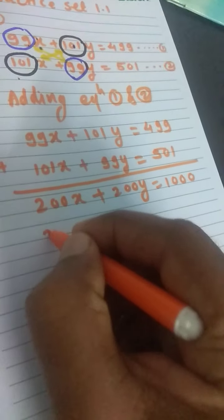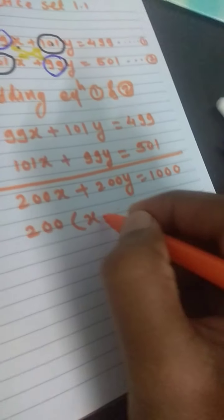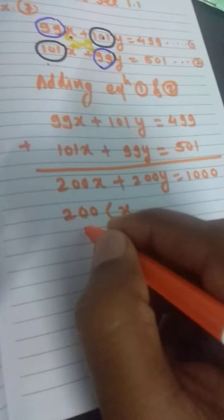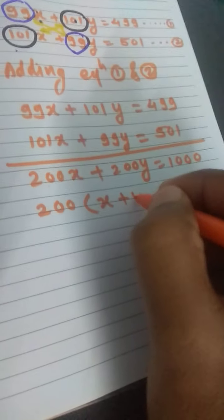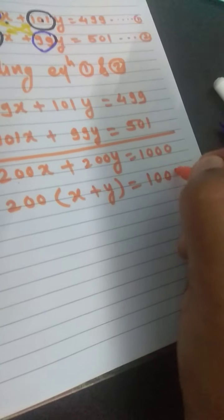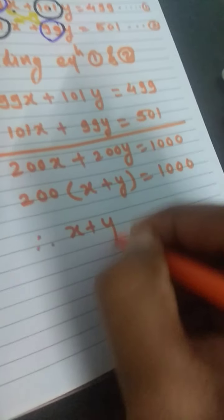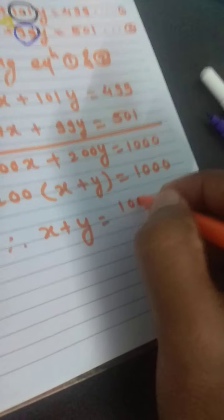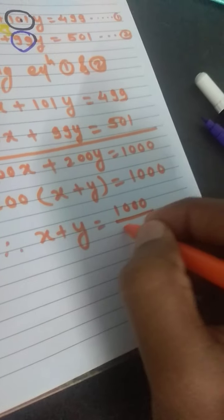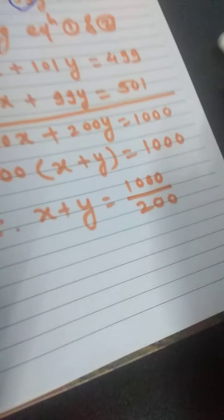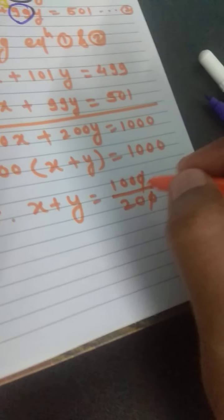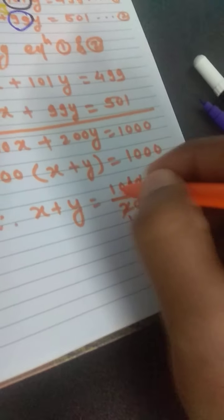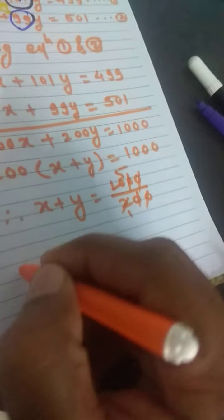Taking 200 common, we get 200 times (x plus y) equals 1000. Therefore, x plus y equals 1000 divided by 200. The zeros cancel, 10 divided by 2 is 5. So x plus y equals 5.